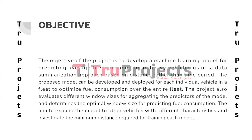The project objective is to create a machine learning model that predicts the average fuel consumption of heavy vehicles by utilizing a data summarization technique based on distance rather than time interval. This model can be applied to each vehicle within a fleet to enhance fuel efficiency across the entire fleet. The project also examines various window sizes for aggregating the model's predictors and identifies the most effective window size for accurate fuel consumption prediction.